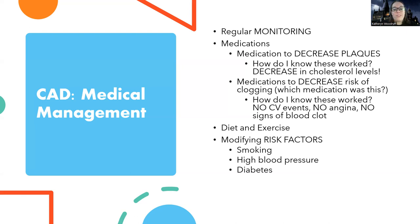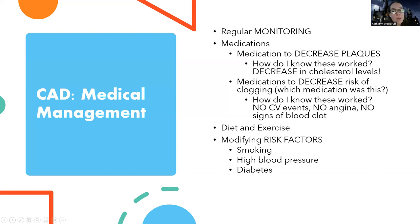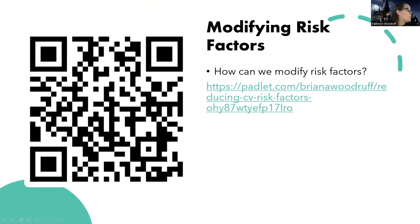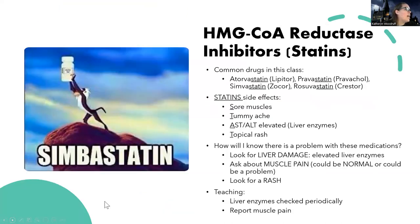Diet and exercise are an important part of CAD. Everything in cardiac is about modifying risk factors - you're not just going to take a medicine and that's it. Smoking is probably one of the best things you can stop. If you stop, you significantly decrease your risk. High blood pressure and diabetes management as well - you can't change that you have it, but you can make it better.